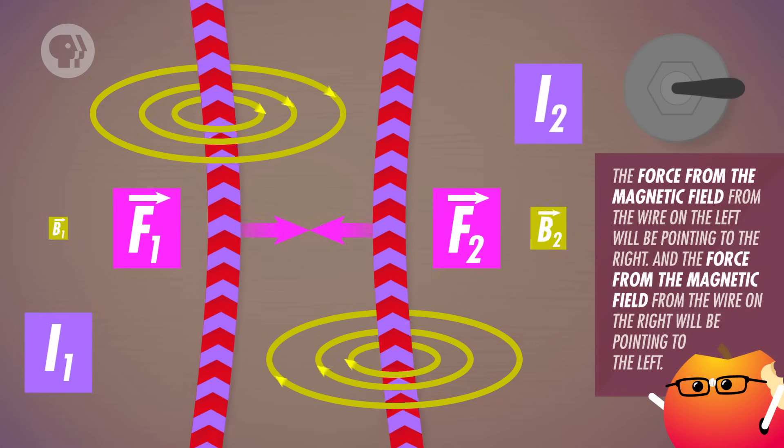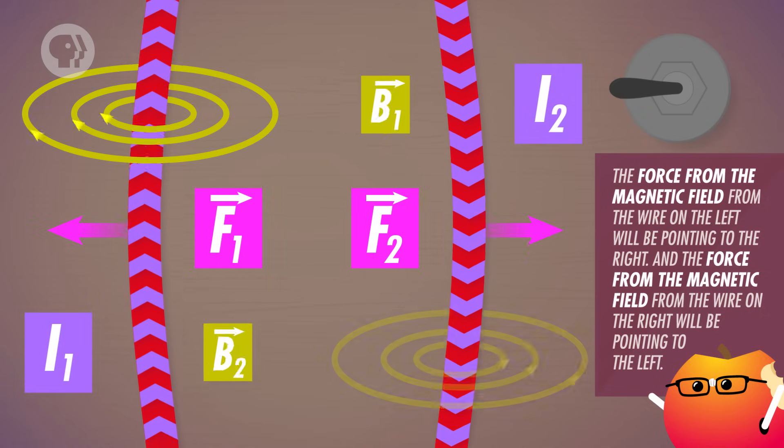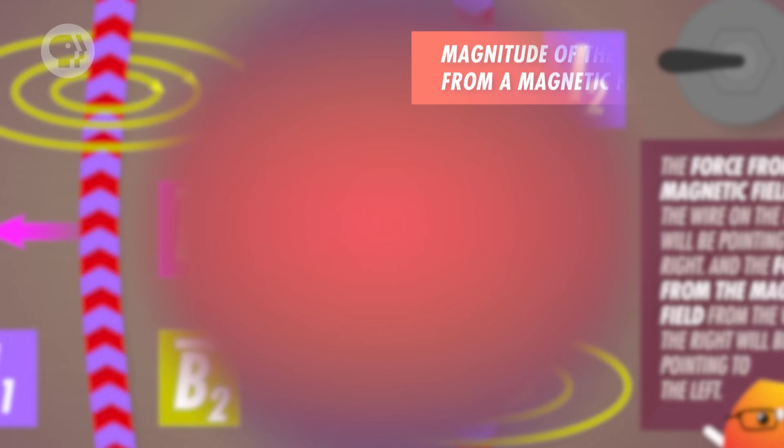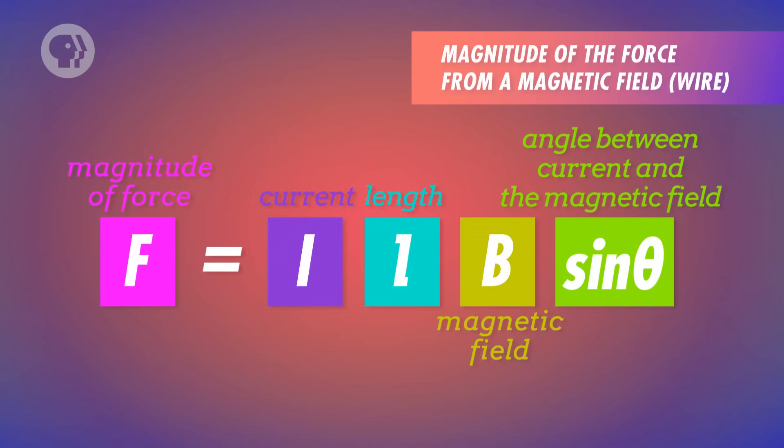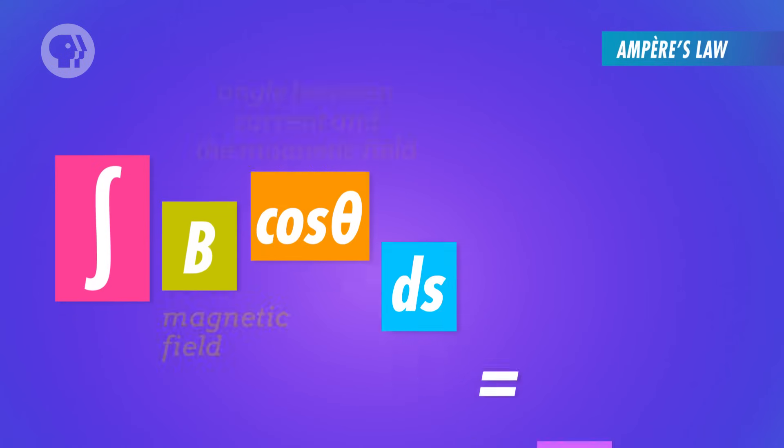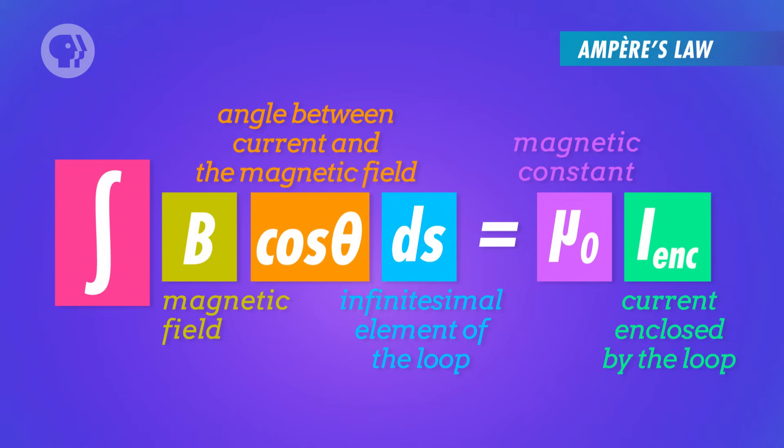For the case where the current is flowing in opposite directions, the reverse is true, so they'll repel each other. Now, Ampère also wanted to find the force from the magnetic field on the wires. Like we talked about last time, the force depends on the angle between the current and the magnetic field, the strength of the current, the length of the wire, and the strength of the magnetic field.